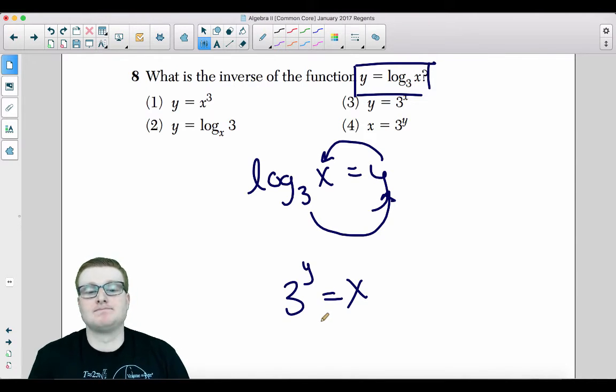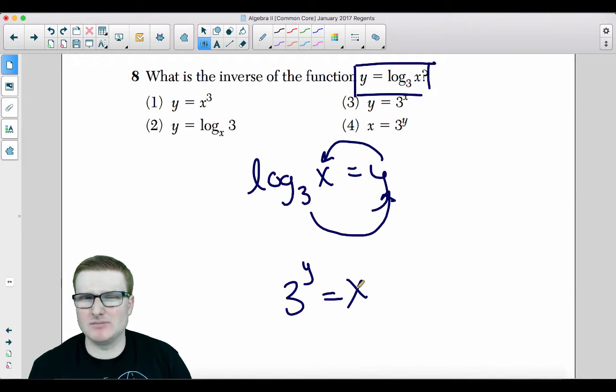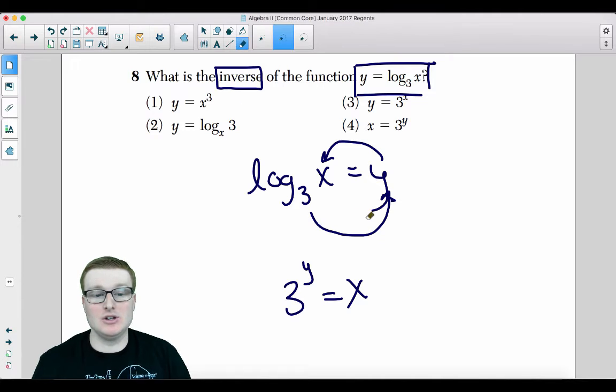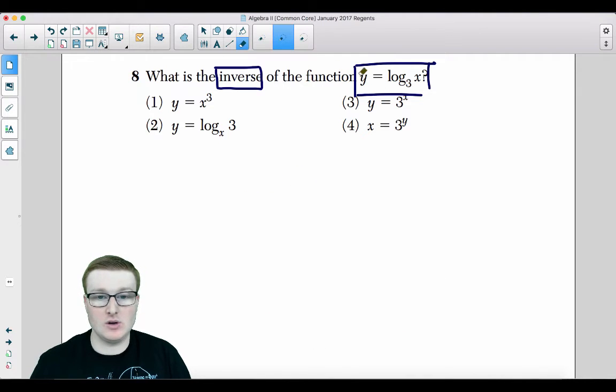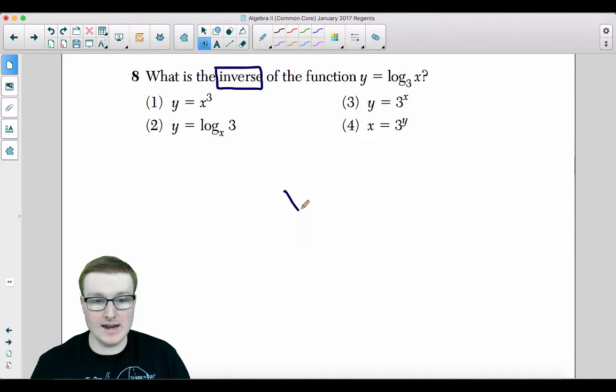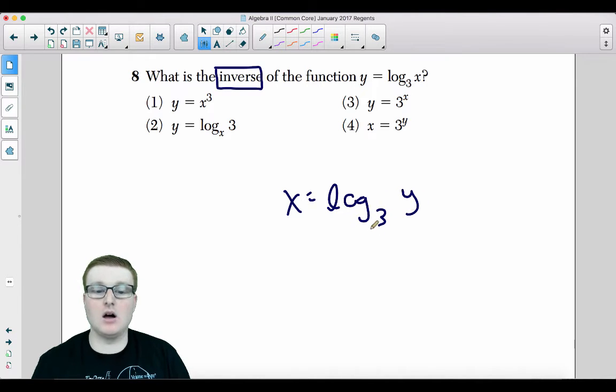Three raised to the y and set it equal to x. But we got a problem. That's not the inverse because your exponent is y. Your y should be down here. For an inverse, you need to first switch the x and the y and solve for y. So let's go ahead and do that right now. We get x equals log base three of y. Now we got something here. Loggy loop this. Three to the x equals y. That's what we need.